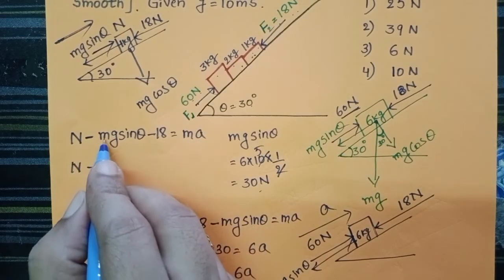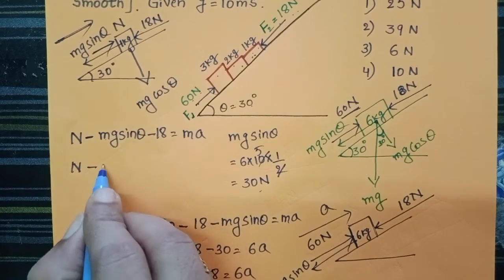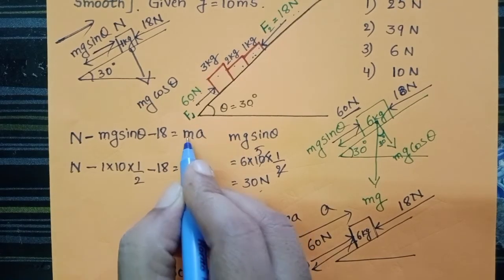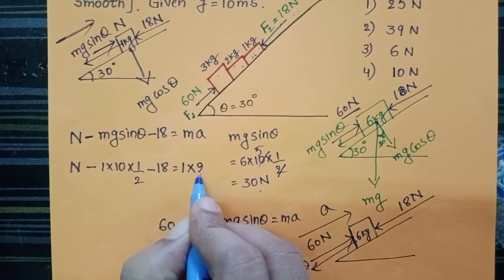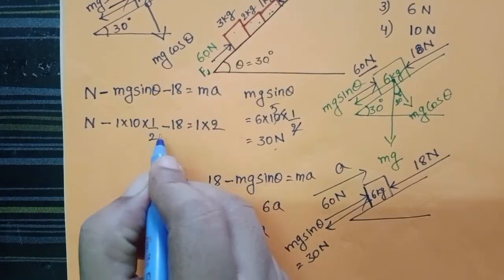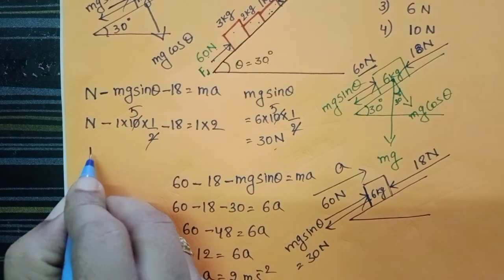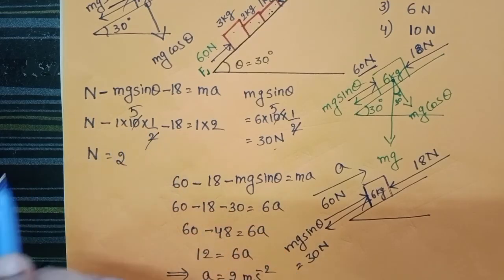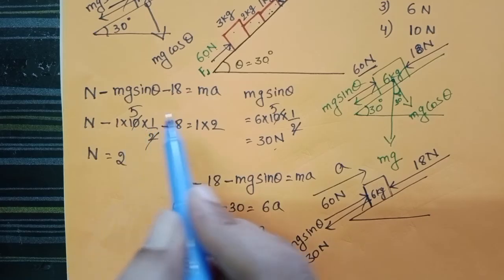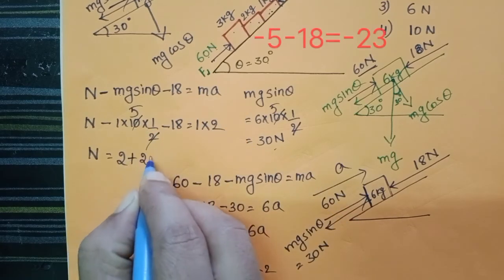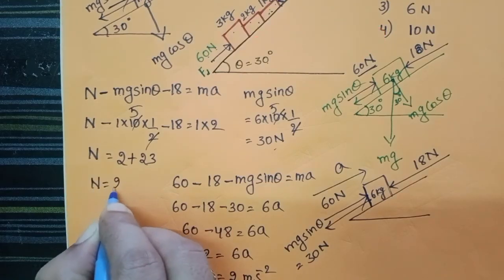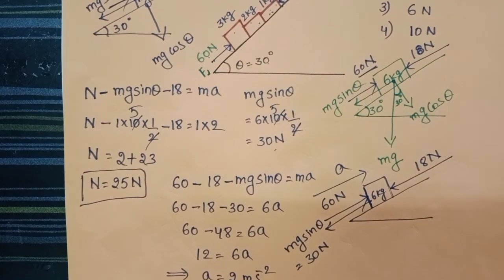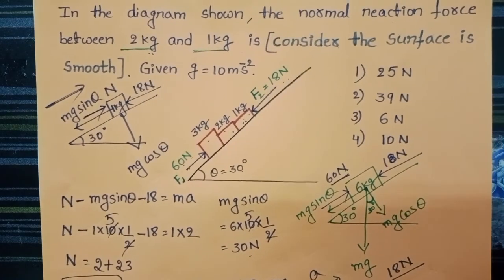N minus (mass 1kg × g value 10 × sin30° × 1/2) minus 18 equals mass 1 × acceleration 2 m/s². This gives N minus 5 minus 18 equals 2, so N equals 2 plus 5 plus 18 equals 25. Therefore, N equals 25 newtons. The normal reaction force between 2kg and 1kg is 25 newtons.